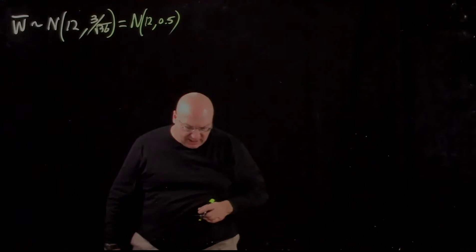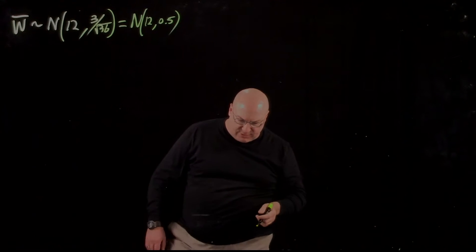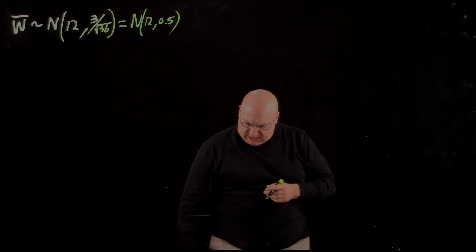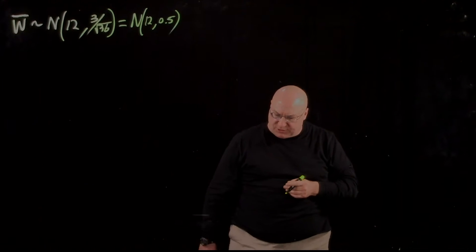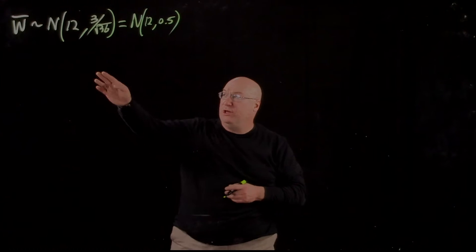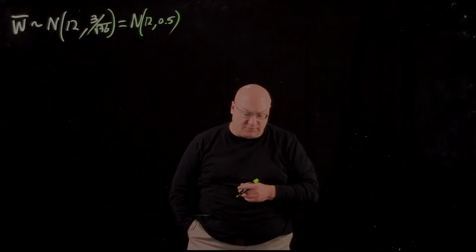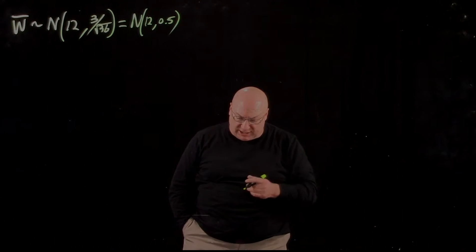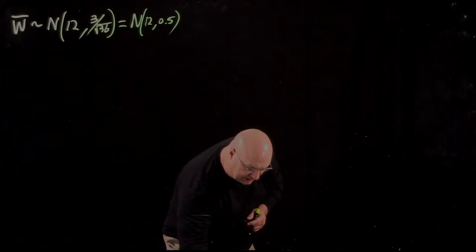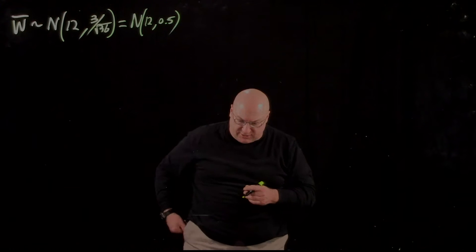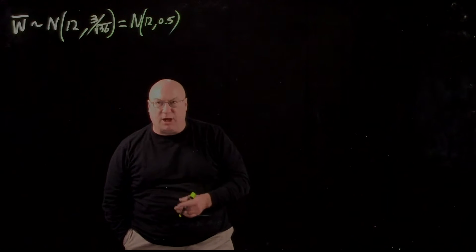And that works because W bar is normal, and N equals 36, greater than or equal to 30. So W bar is normal with mean 12 and standard deviation 0.5. We're just checking that 36 being bigger than or equal to 30 is our criterion for saying that it's normal.